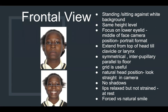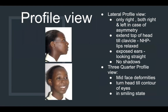For the lateral profile view, ask the patient to turn to the right — only the right view is required, not the left. But in cases where the patient has a facial asymmetry, you have to take both right and left. Extend from the top of the head till the clavicle, in natural head position with lips relaxed. Expose the ear completely so you see the full ear. Ask the patient to tie their hair or put it at the back. Looking straight, there should be no shadows, so you can see the full face line with no shadows.